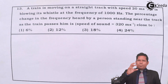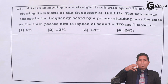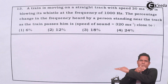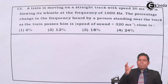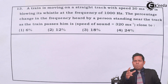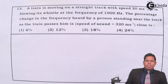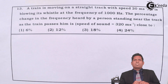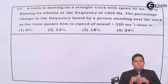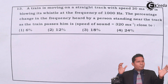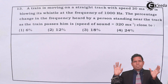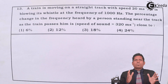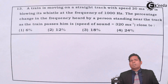As the train approaches, the frequency heard by the observer — the apparent frequency — will increase. And as the train just passes and recedes from the observer, the frequency will drop. So while approaching and while receding, there is an increase and decrease of frequency. You have to find the percentage change in the frequency of sound heard by the observer. This will be the difference: the increase minus the decrease, divided by the original frequency, into 100.